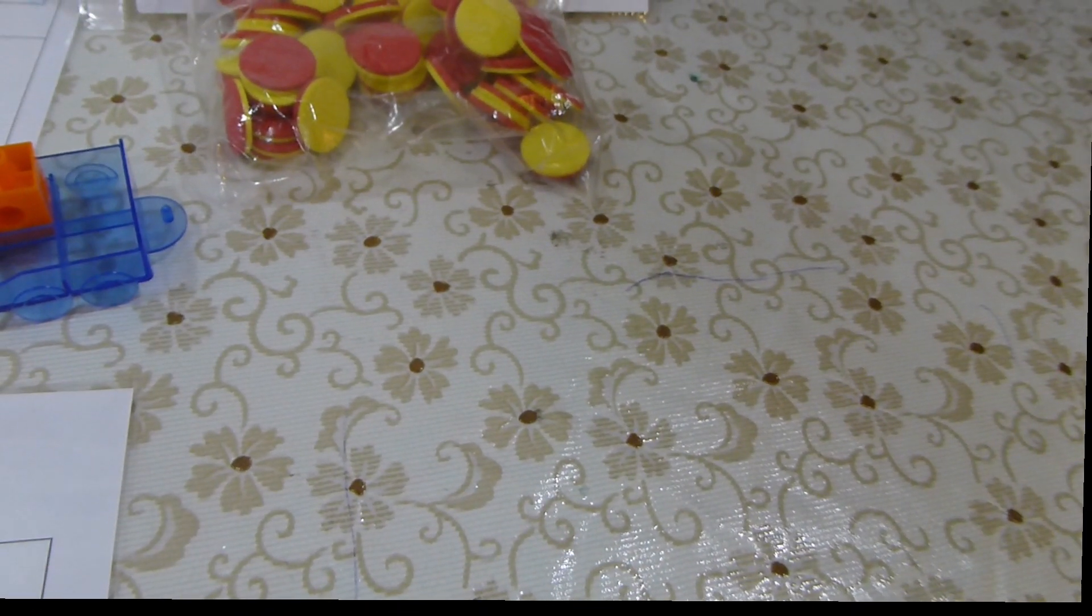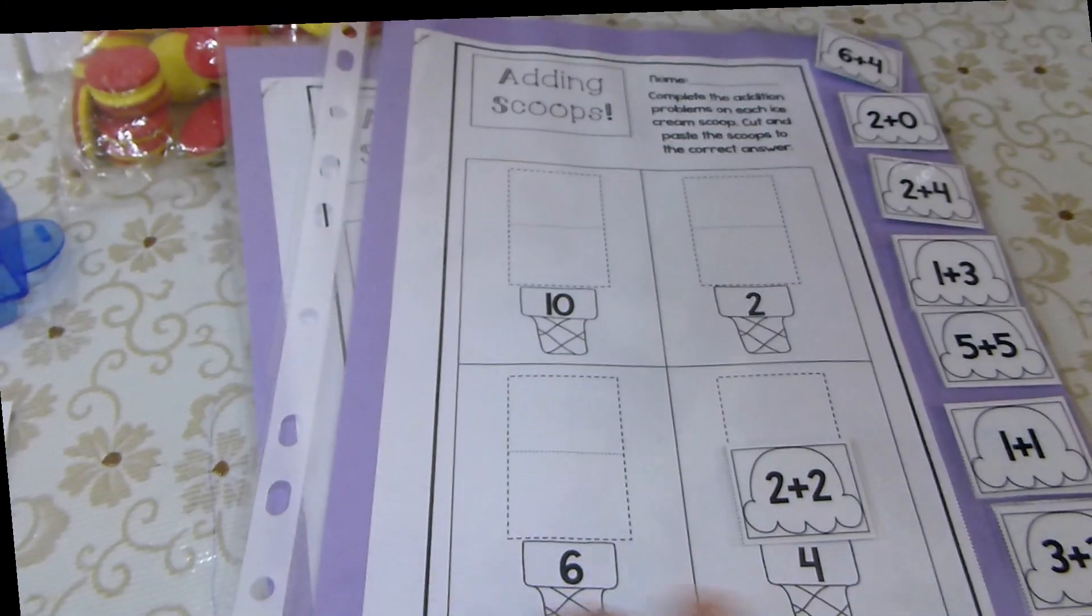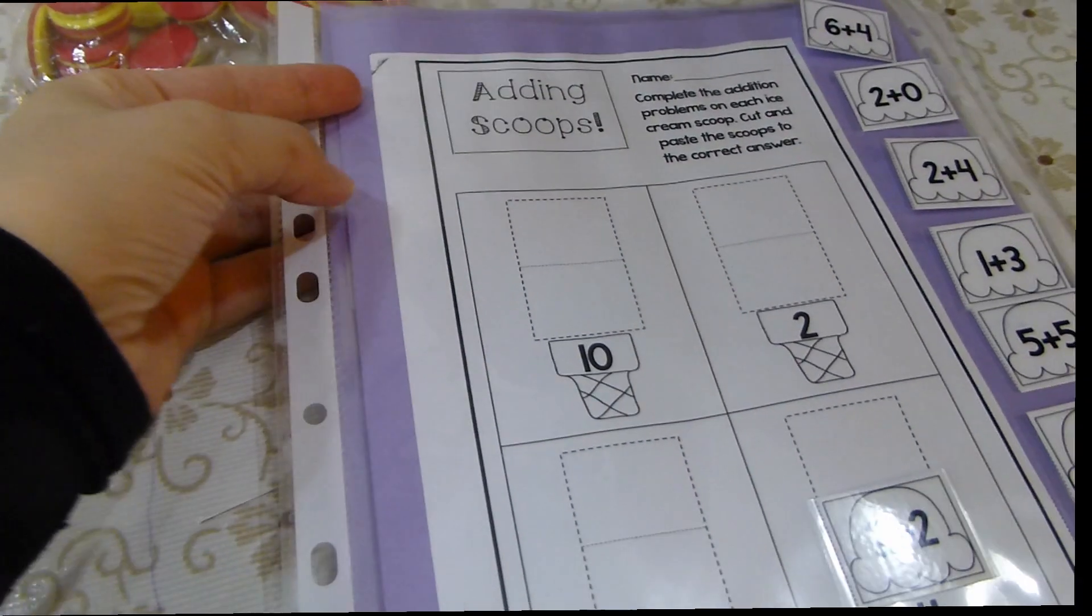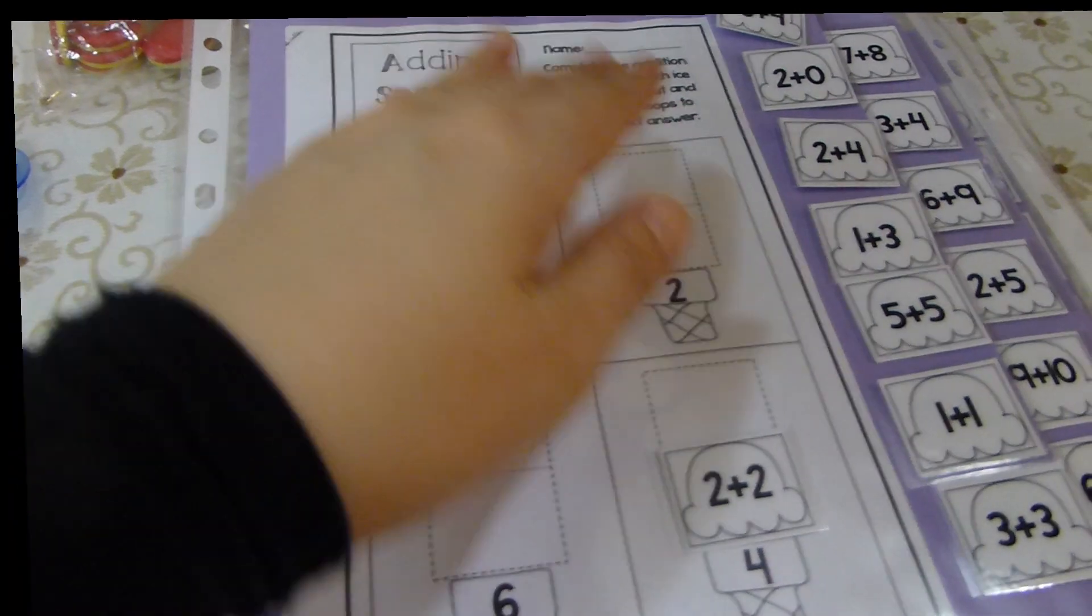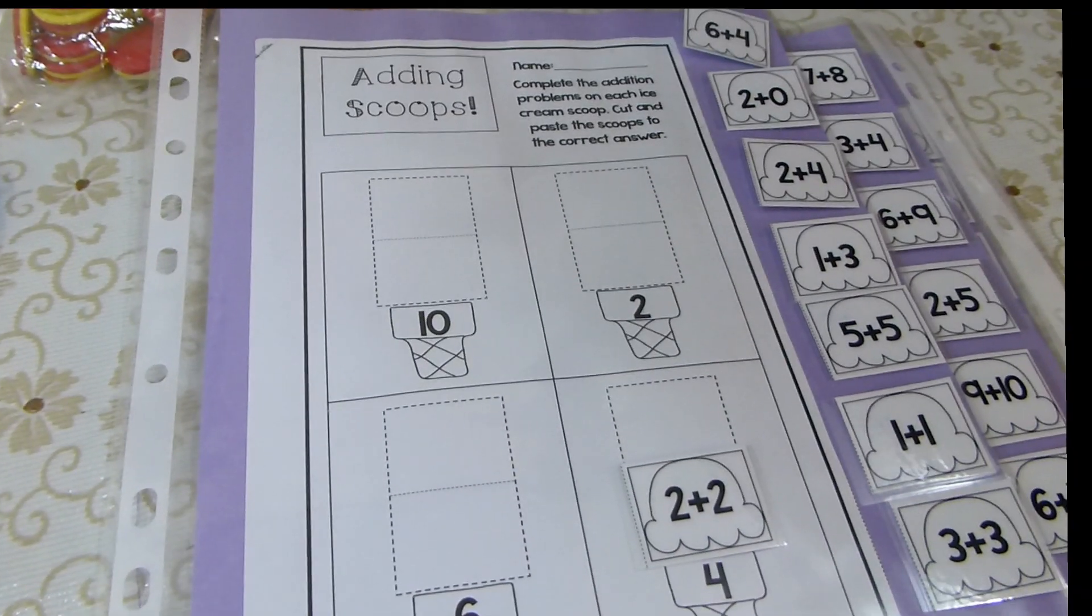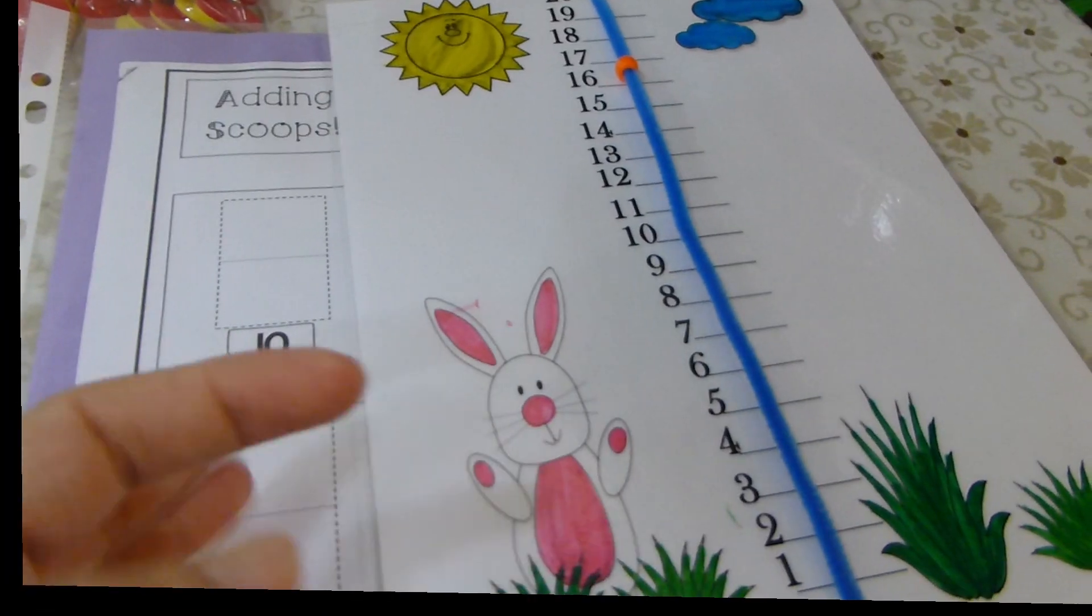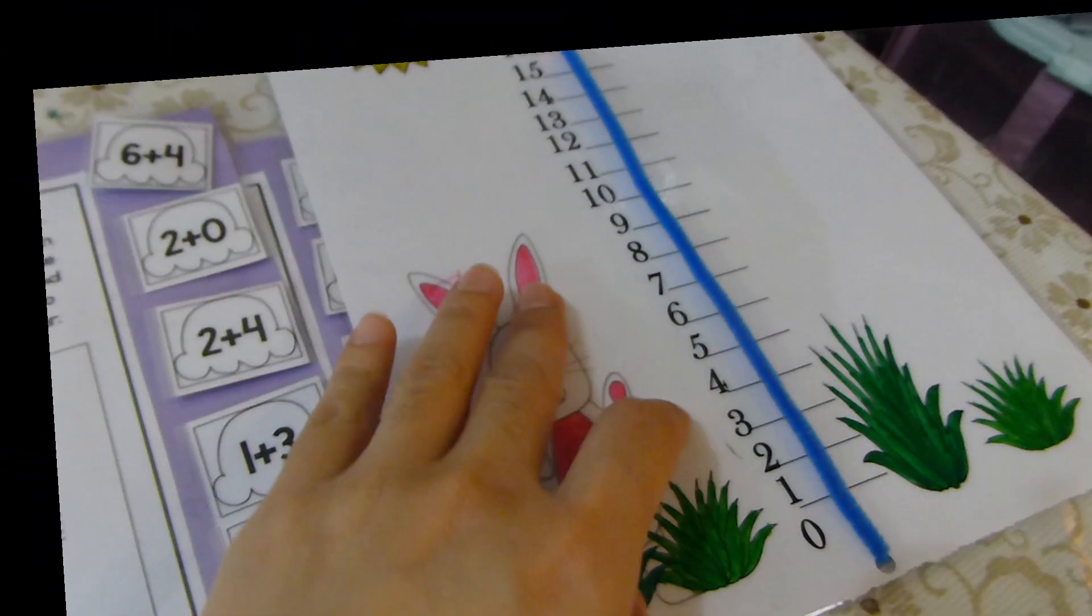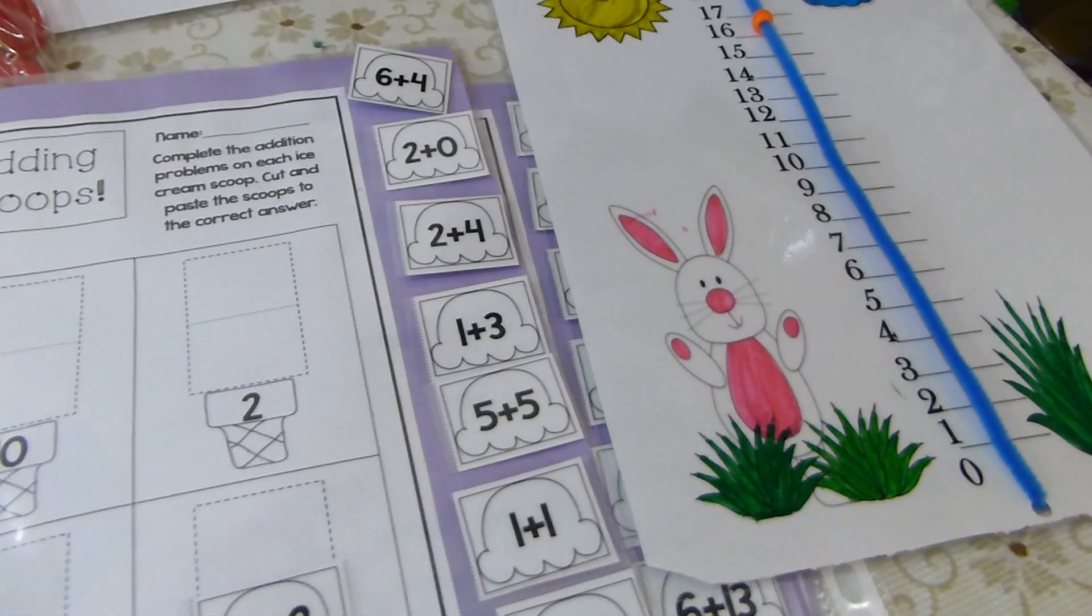The next game that I'll present for you today is this one. I found it as a printable and I will link in the description box below where you can get this one. I cut out the paper, this part, and I laminate it so the child can use it. And then I found this number line. This is an amazing craft. I made it for them so they can use it with this game.